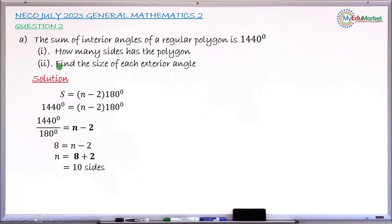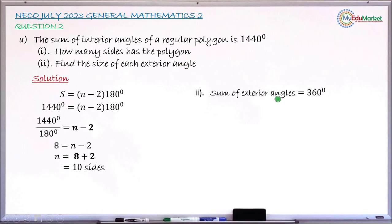Moving to Roman 2: we need to find the size of each exterior angle. Remember the polygon in the question is regular, meaning all angles are equal and all sides are equal in length. To answer this, we use the theorem which states that the sum of all exterior angles in any polygon is equal to 360 degrees.